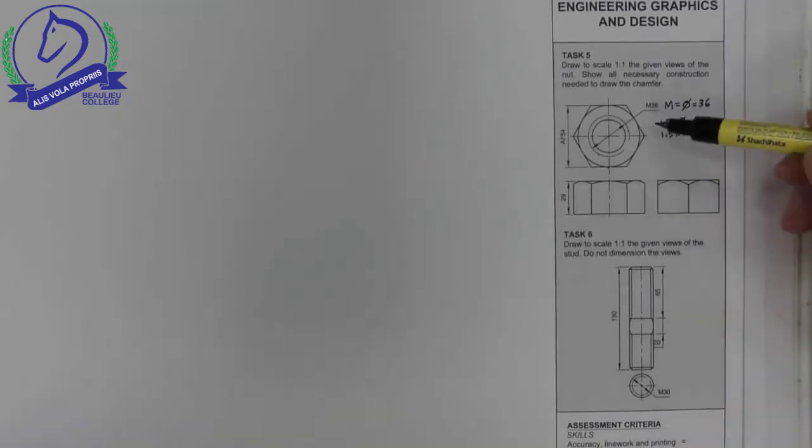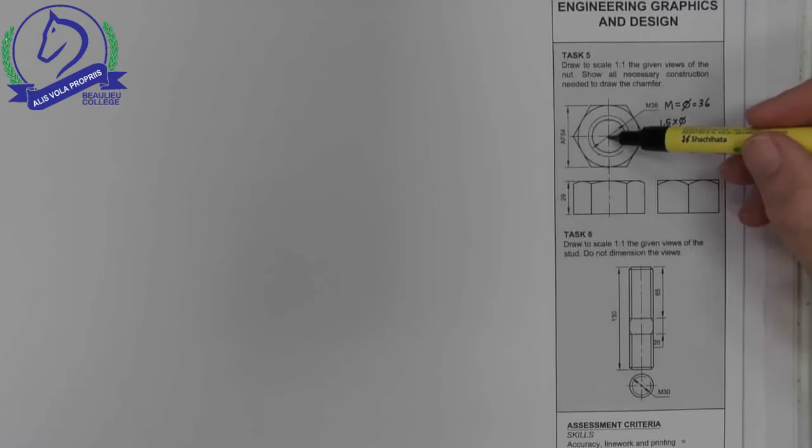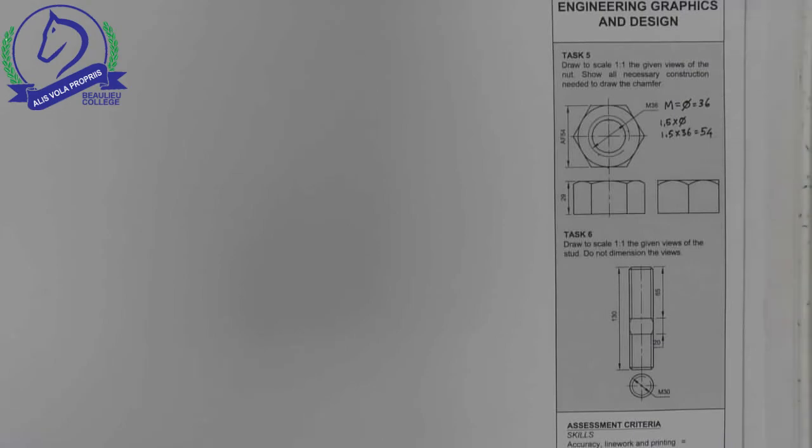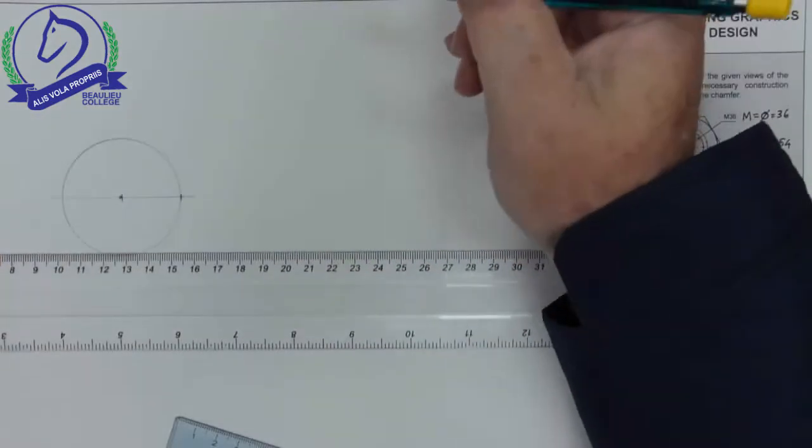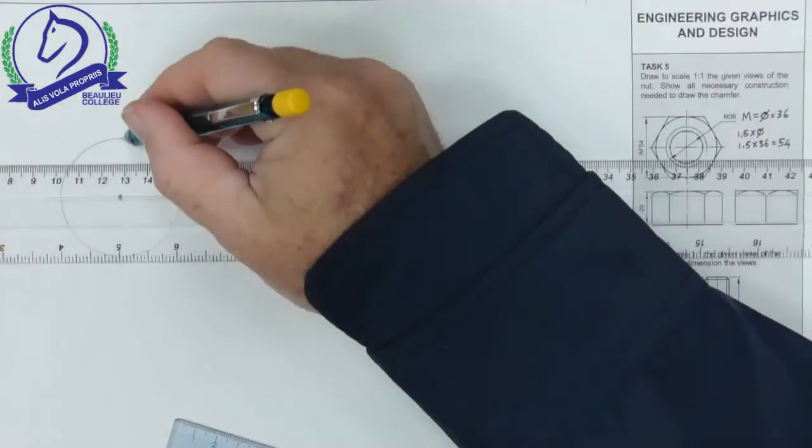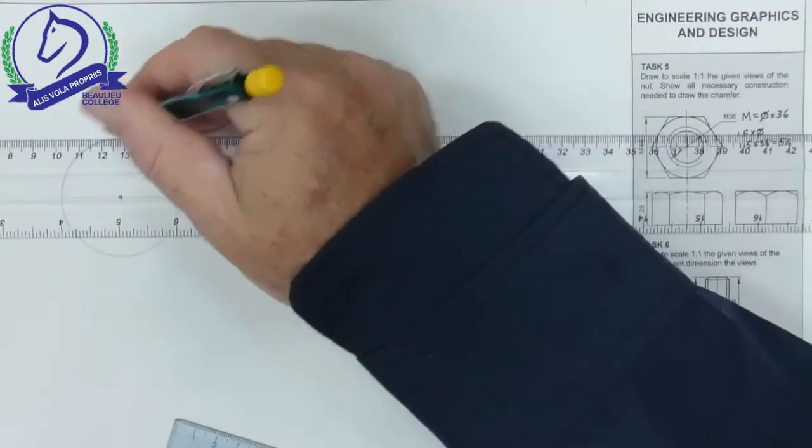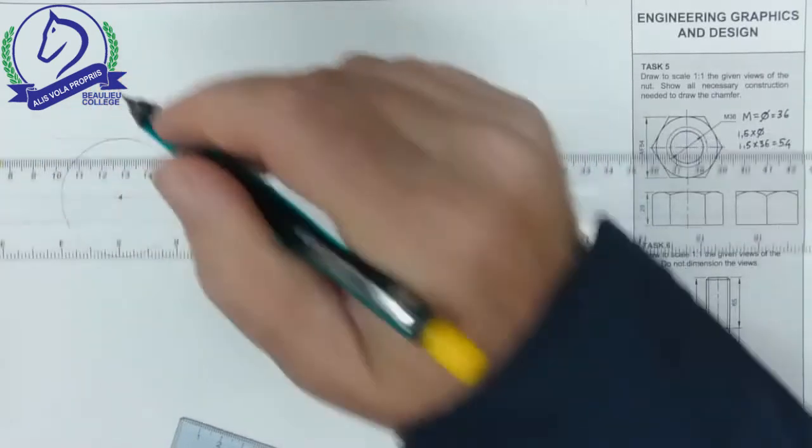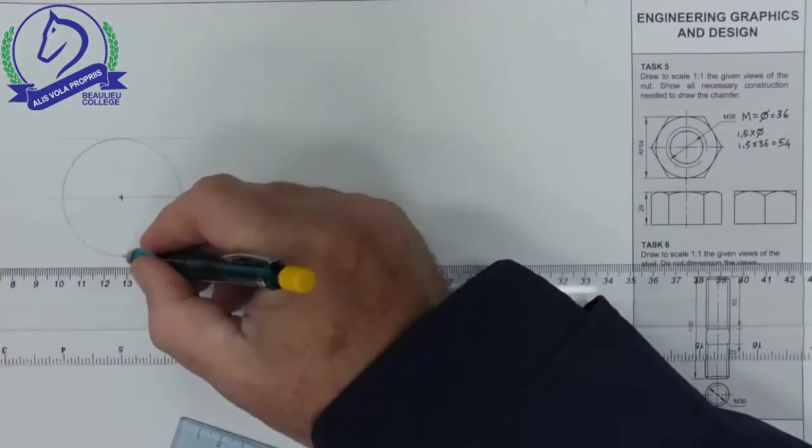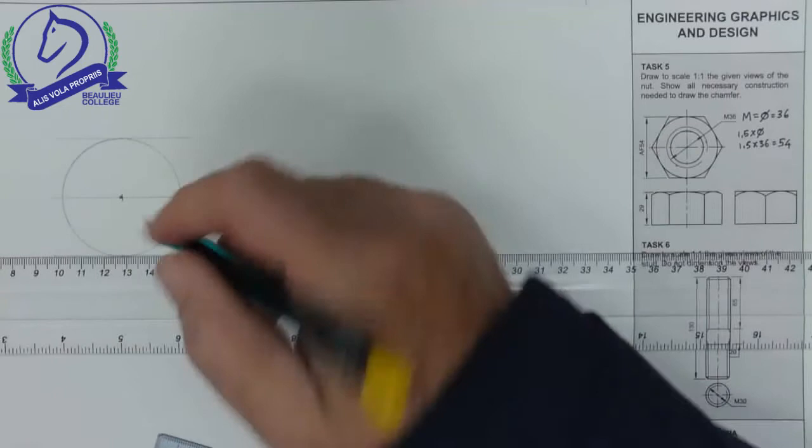So I'm going to get started with my construction. I'm going to start by drawing the circle that has a diameter of 54. There's my circle. Now what I need to do is draw tangents. Tangent is a point that only touches the circle in one point.